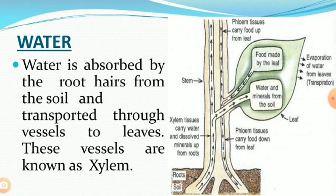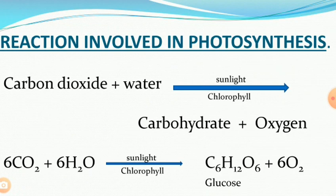Food can move in both the upward and downward directions. Now, the reaction which takes place during photosynthesis: carbon dioxide and water combine in the presence of sunlight and chlorophyll to give carbohydrate and oxygen. Glucose is the simplest carbohydrate, and the formula of glucose is C6H12O6.